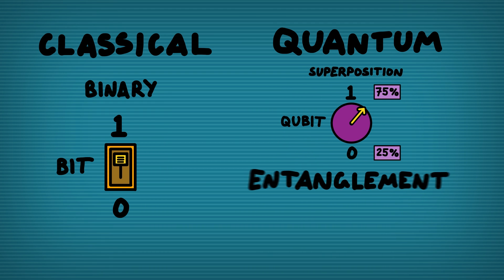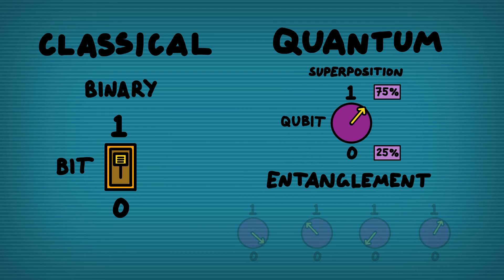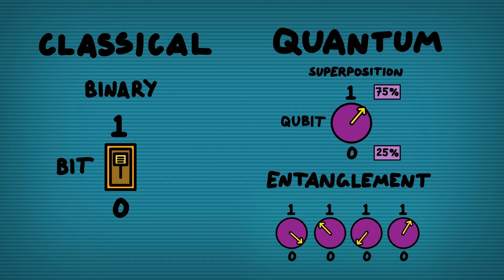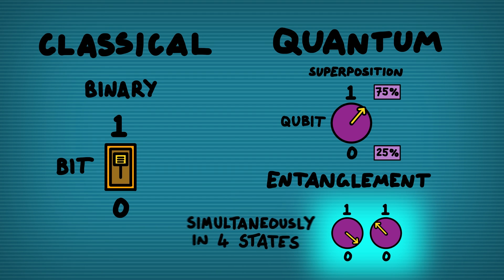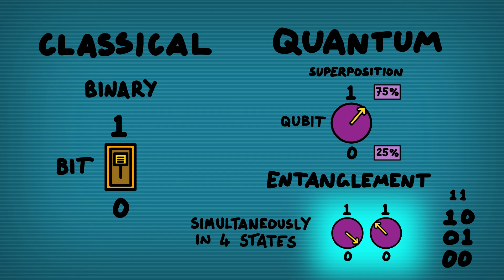The second phenomenon is called entanglement. This is where you bring together several qubits, join them together, and now that whole thing has to be treated as one object. So if you take two qubits and join them together, this object can be in a mixed state of four states: 00, 01, 10, and 11. Each time you add a new qubit you double the number of states that the system can be in, and that goes up exponentially.